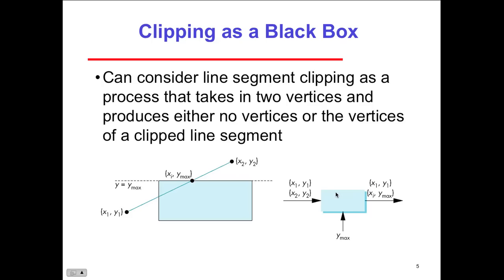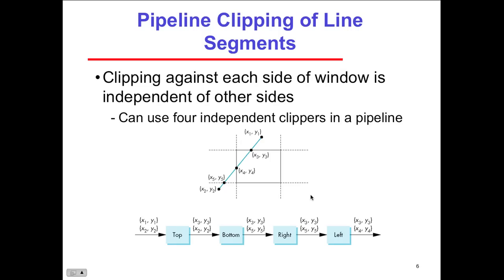You can consider line segment clipping as a black box that takes two vertices and produces either no vertices or the vertices of a clipped line segment. Pipeline clipping of line segments clips against each side of the window independently, so you can use four independent clippers in the pipeline. You can actually mix and match different algorithms for different types of clipping. Keep in mind: OpenGL clips for you automatically. If you weren't using a high-level language like OpenGL you would have to calculate this yourself.